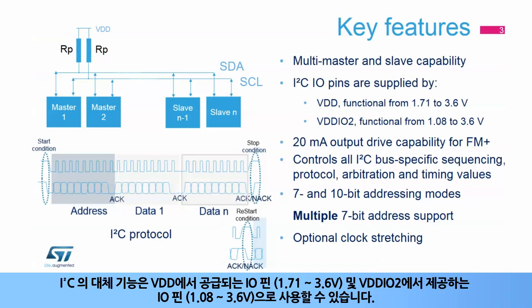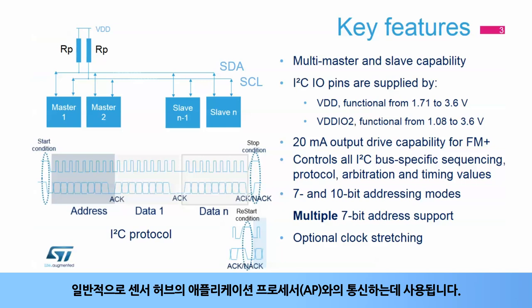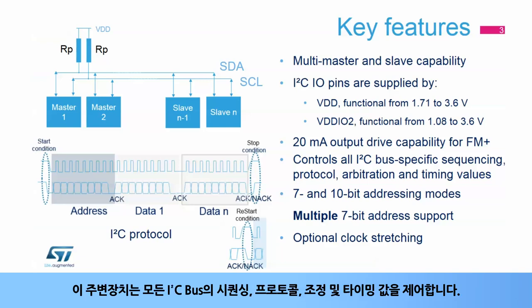The I2C alternate functions are available on I/O pins supplied by VDD, which can be from 1.71 to 3.6 volts, and on I/O pins supplied by VDD I/O 2, which can be from 1.08 to 3.6 volts. This allows communication with external chips at voltages different from the STM32L4 main power supply. A typical use case is communication with an application processor in sensor hub applications. The I/O pins support the 20 milliamp output drive required for Fast Mode Plus.